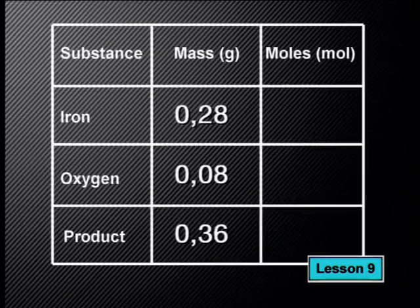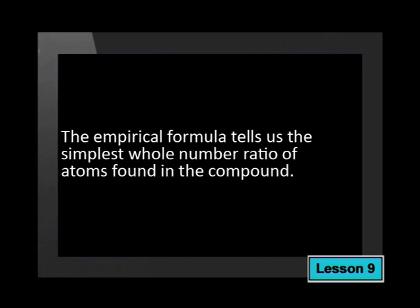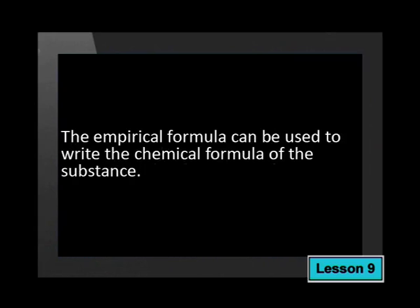The data we got from that experiment is extremely useful. Let me show you how we can use it to find the percentage composition and the empirical formula of the compound that formed. Let's find the empirical formula first. Remember, the empirical formula tells us the simplest whole number ratio of atoms found in the compound. This can then be used to write the chemical formula of the substance. Iron has two common oxides: iron 2 oxide with the formula FeO, and iron 3 oxide with the formula Fe₂O₃. I wonder what the formula is of the oxide we formed in the lab.